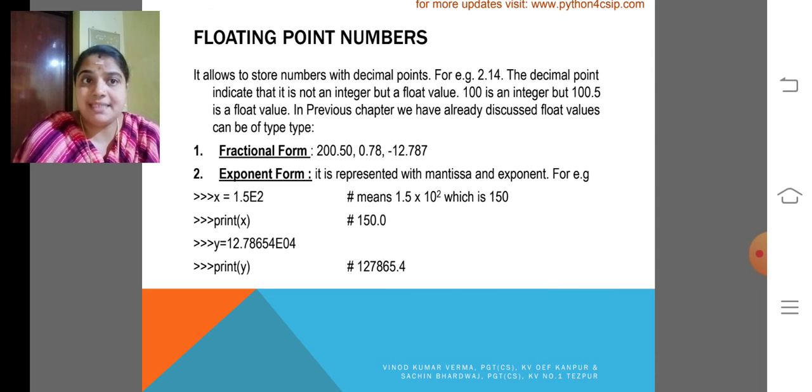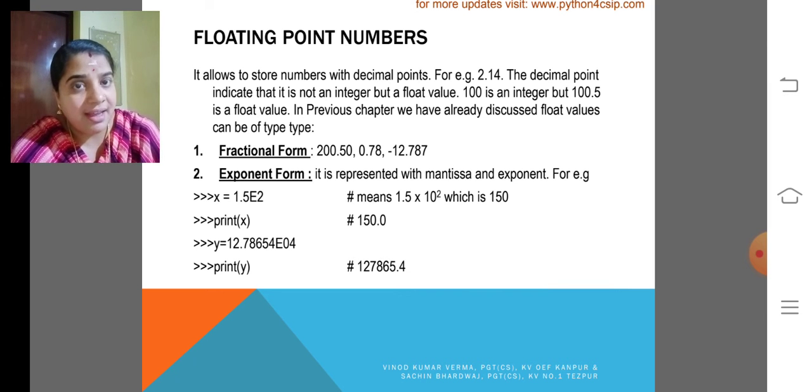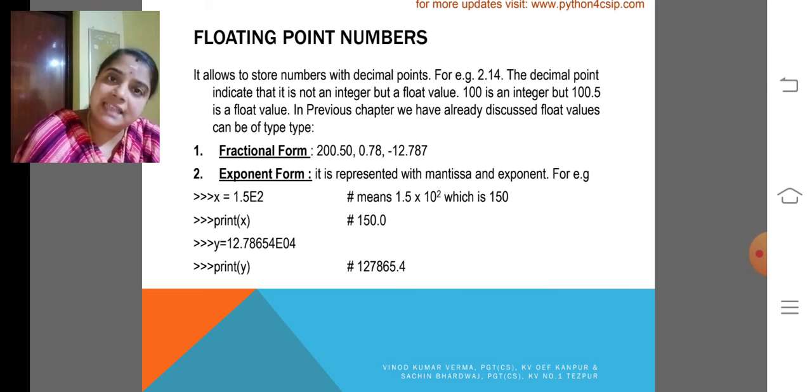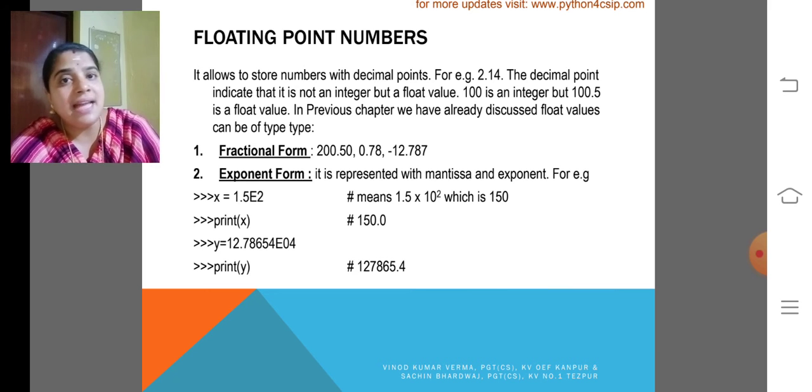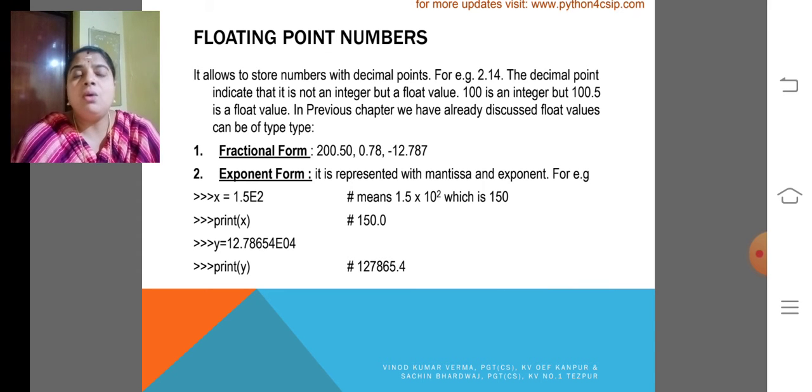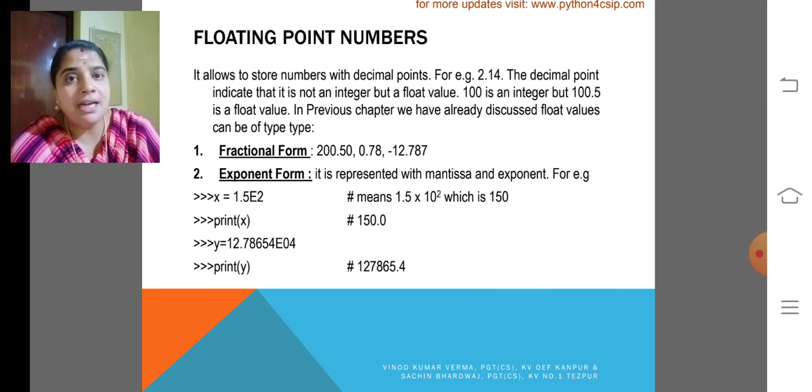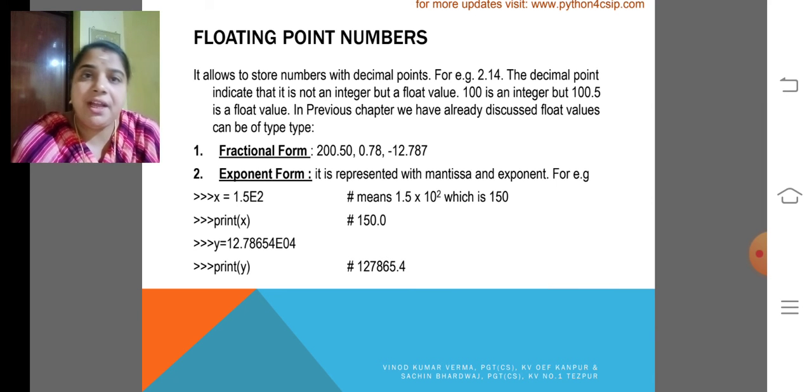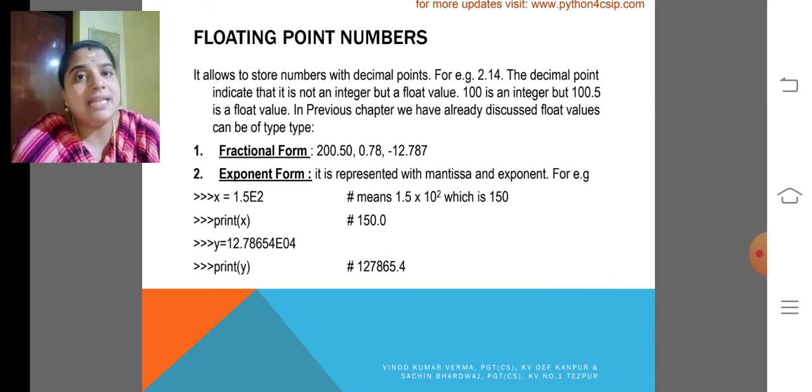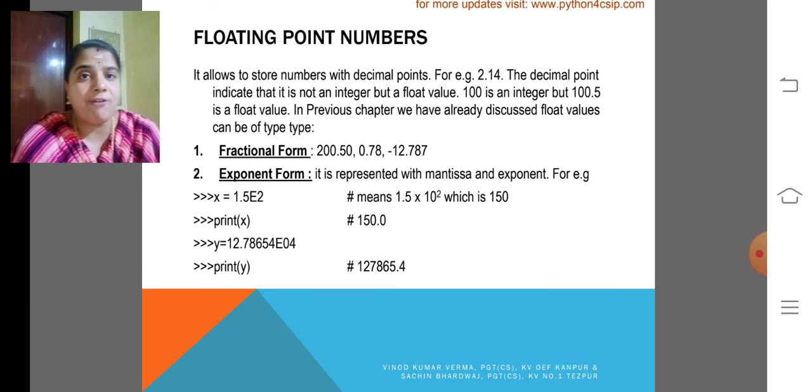In the previous chapter, we already discussed float values can be of two types: fractional form and exponent form. Fractional form is 200.50. Any number with a decimal point is termed to be fractional form.